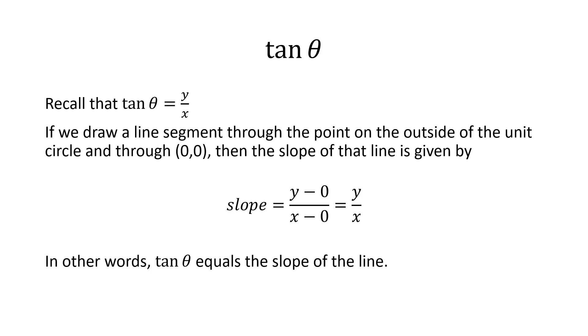It turns out that tan theta represents the slope of a line through the origin on the unit circle. Why is that? Well, let's just remember that tan theta equals y over x. That's a formula that we talked about in an earlier video.